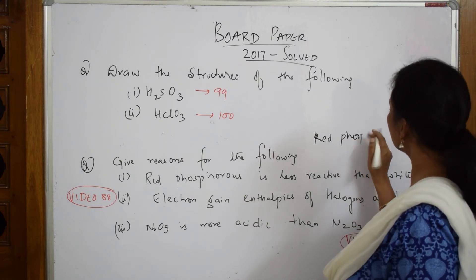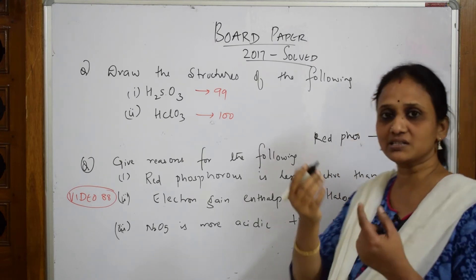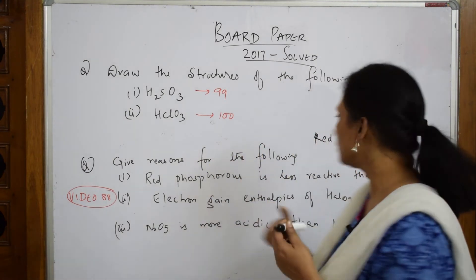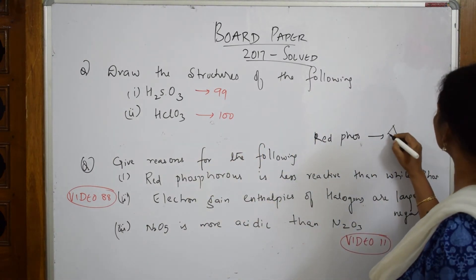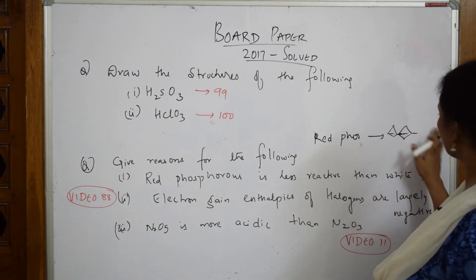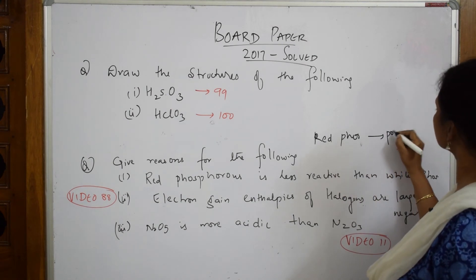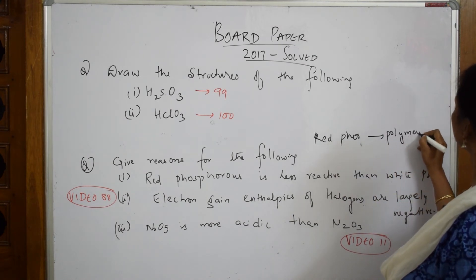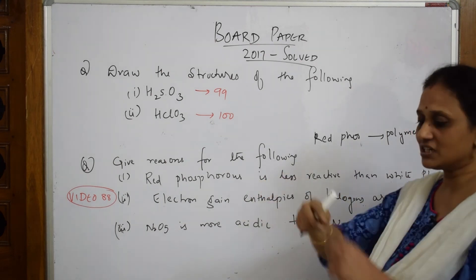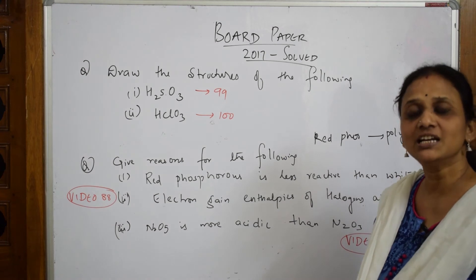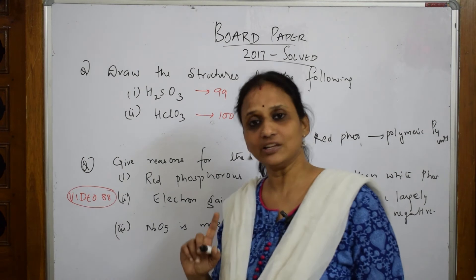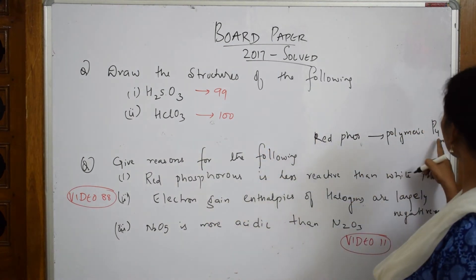Red phosphorus basically has a polymeric structure. Go through the video where I've shown you the structure of red phosphorus — the P₄ units are linked one after another to form polymeric units. The main reason red phosphorus is less reactive is these polymeric P₄ units. We require more energy to break them, so the bond dissociation energy is high, making it less reactive.